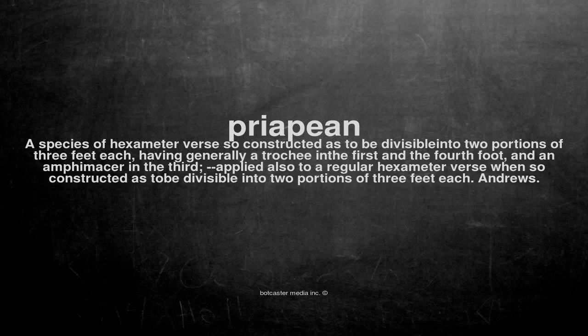A species of hexameter verse so constructed as to be divisible into two portions of three feet each, having generally a trochee in the first and the fourth foot, and an amphimacer in the third. Applied also to a regular hexameter verse when so constructed as to be divisible into two portions of three feet each.